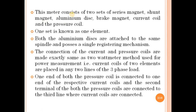The two sets in this meter are: series magnets — two sets; shunt magnets — two sets; aluminum disc — two sets; brake magnets — two sets; current coil — two sets; and pressure coil — two sets. So there are two complete sets of all these components in the meter.